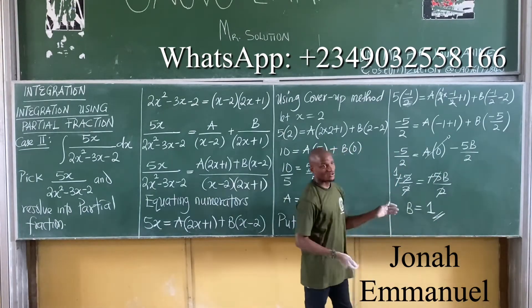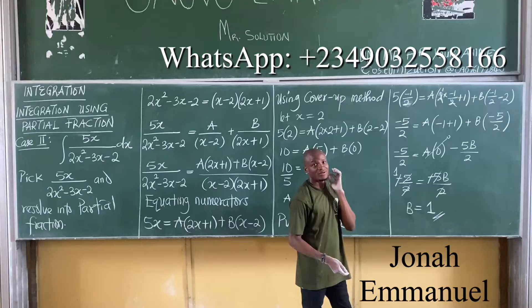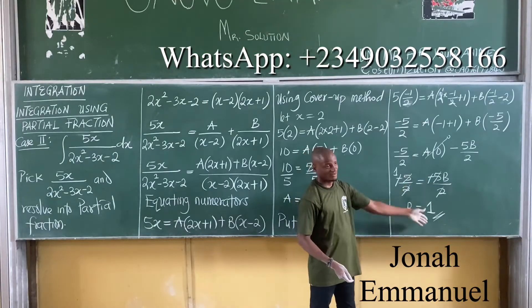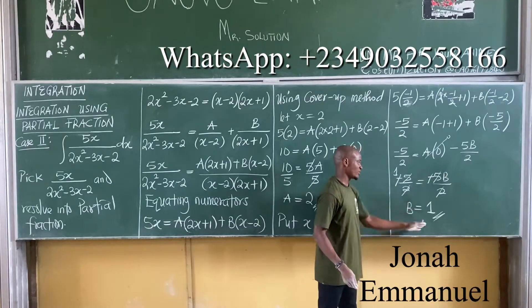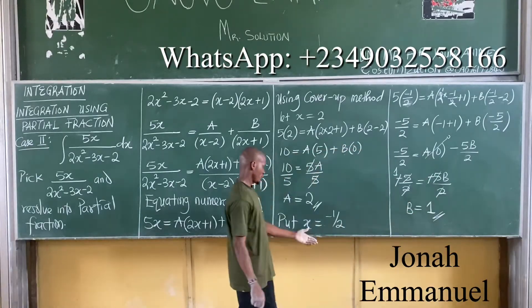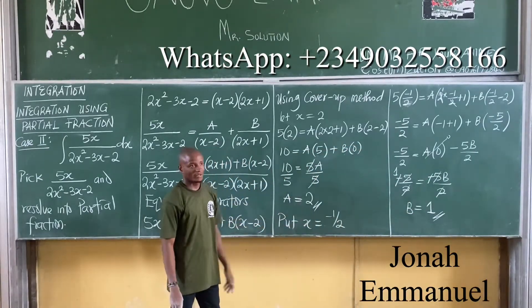You can still do your normal basic maths. Simple concept, the same thing here, you can cancel out giving 1. So hence, A is 2, B is 1.